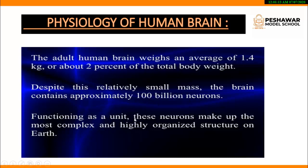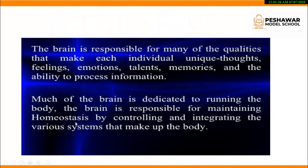The neuron is called the functioning unit of the central nervous system, and it is one of the most complex structures in the universe. The brain is responsible for performing different activities, and because of this brain every individual is different from another — differences in thoughts, feelings, emotions, talents, memories, and so on. The brain not only performs different body functions but also controls our homeostasis. Homeostasis, as discussed in previous chapters, is the process of keeping our internal body environment constant, and the brain plays a very important role in this.